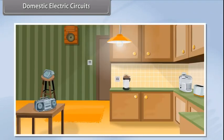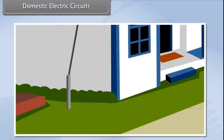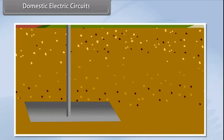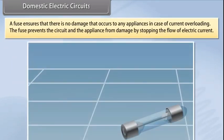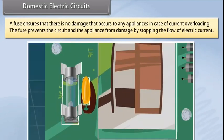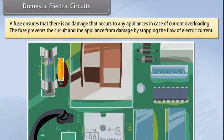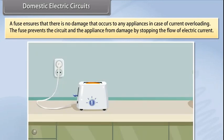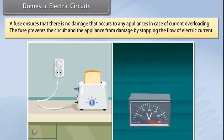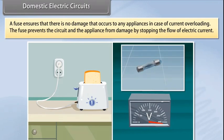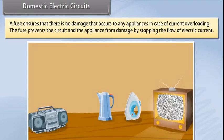There are different circuits used for different appliances being used in the house. The earth wire is connected to a metal plate deep into the earth to avoid receiving any severe shock in case of any leakage of current while using the appliances. A fuse is an important component of all circuits. It ensures that there is no damage that occurs to any appliances in case of current overloading. Overloading occurs when the live wire and the neutral wire come in contact with each other or there is a rise in the supply voltage. In this case, the fuse prevents the circuit and the appliance from damage by stopping the flow of electric current.